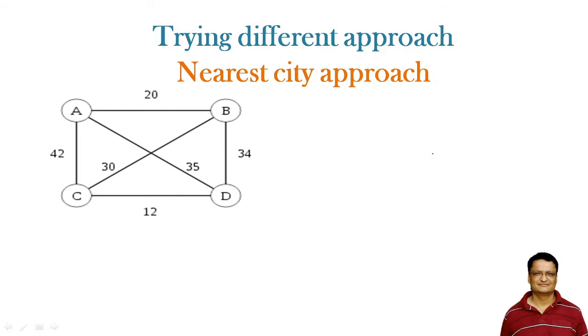What I am going to do in this approach: I will start with A and look for the city with minimum distance. What is the nearest city which I want to visit now? If you look at the diagram, from A, the nearest city is B. So I will go to B. From B now, I will look around and see what is the most nearest city. I will not go back to A, but I have options C or D.